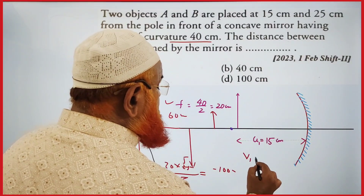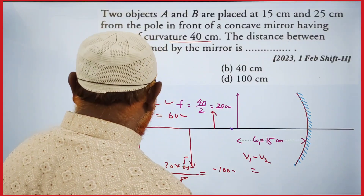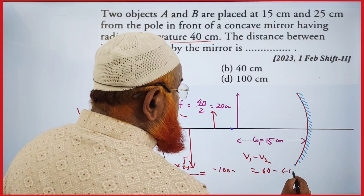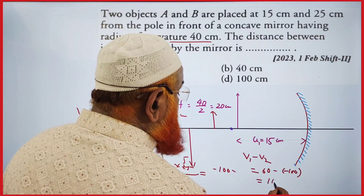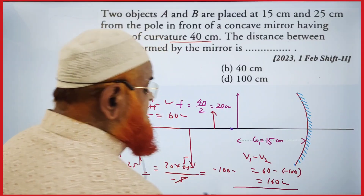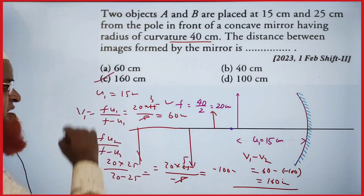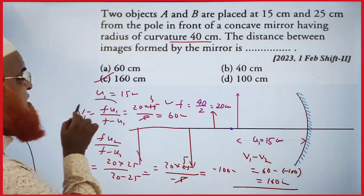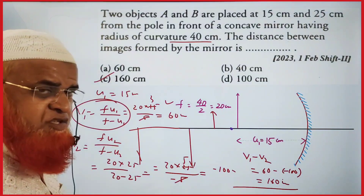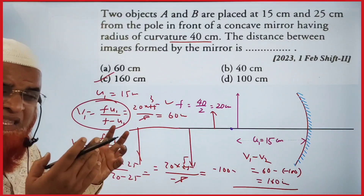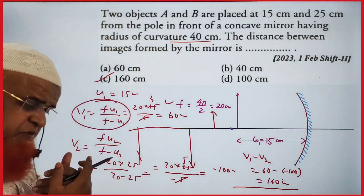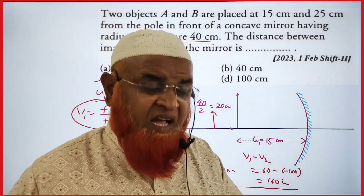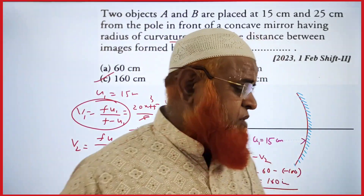Now subtract: v₁ − v₂ = 60 − (−100) = 160 centimeters. That is your answer — 160 centimeters. The shortcut formula is v = f·u / (f − u). If you remember it, in two steps you get both image distances, subtract them, and the final answer is 160 centimeters. Enjoy this shortcut formula — thank you very much!